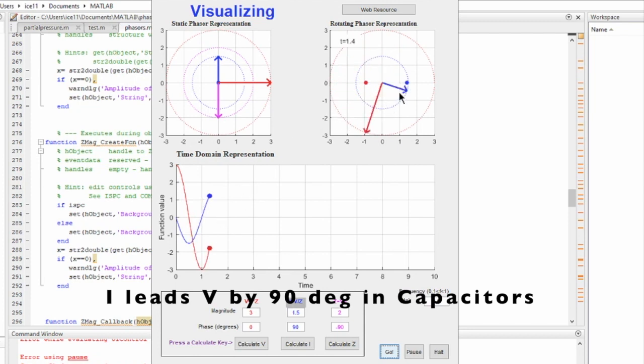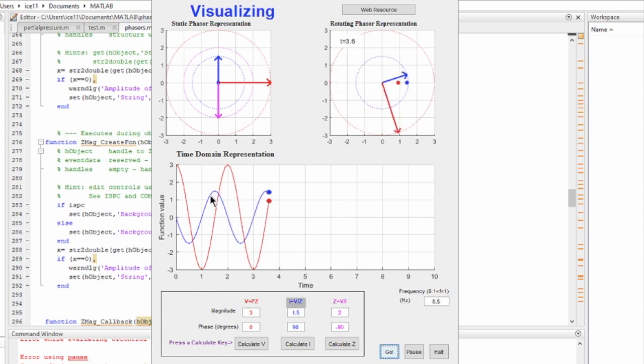So now you see the current leads the voltage, so the current peak appears before the voltage peak. Look at the phasors - the current phasor appears before the voltage phasor. The current phase is in blue.